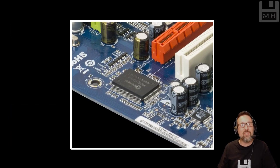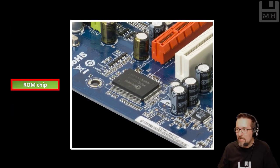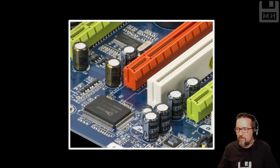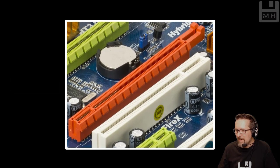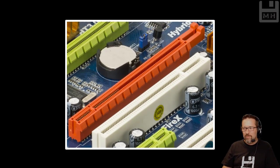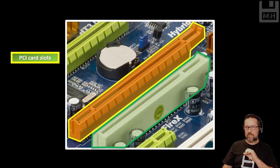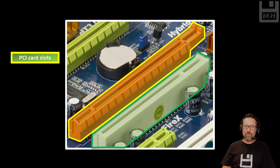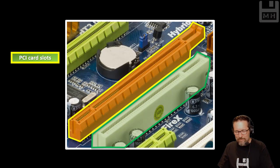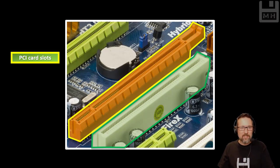Here we have something we were just introduced to a minute ago — a ROM chip, read-only memory. That could have all kinds of firmware on it. These two slots are PCI card slots — PCI stands for Peripheral Card Interface. When we want to add something to the motherboard, like a different device or more functionality, we plug it into the PCI slot.